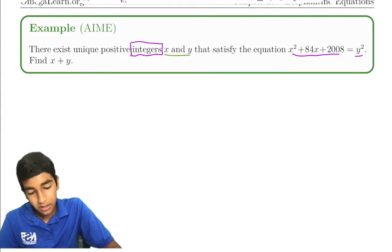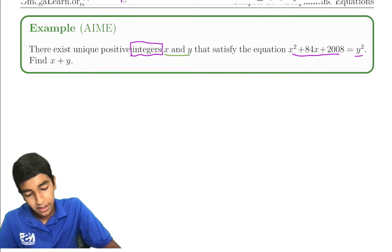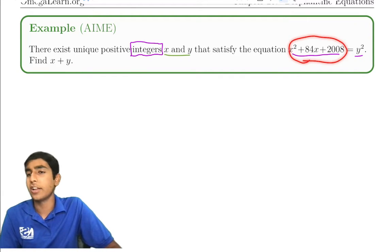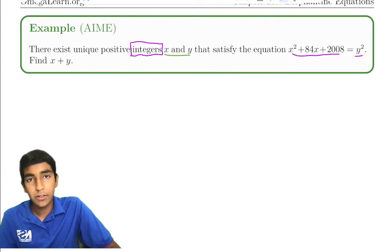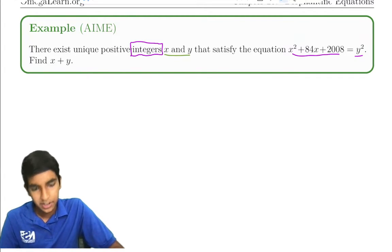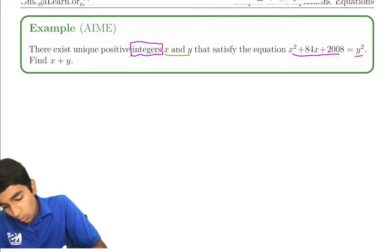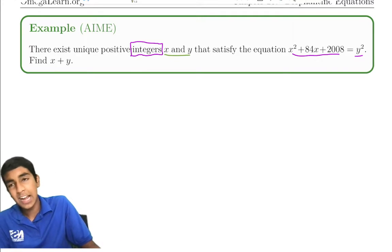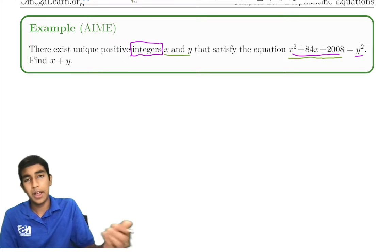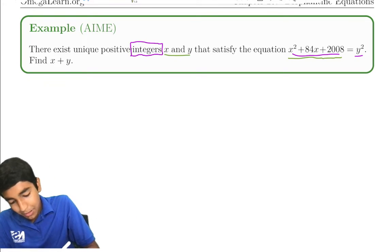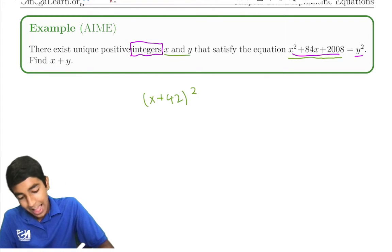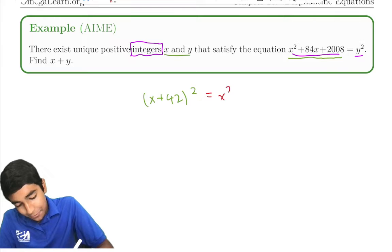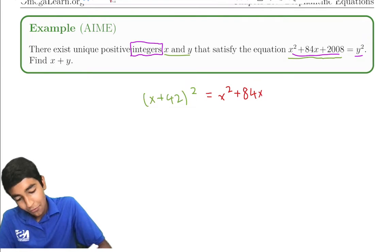So it seems like this almost seems like a binomial expansion, doesn't it? It looks a lot like x² + 2xy + y². So how can we maybe rewrite it in terms of that way? The key thing here is (x + 42)².